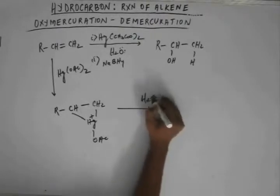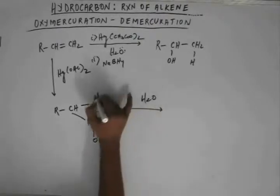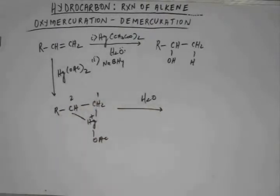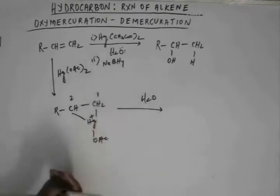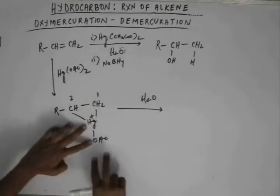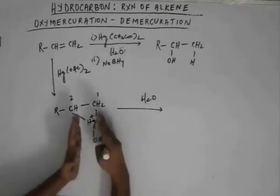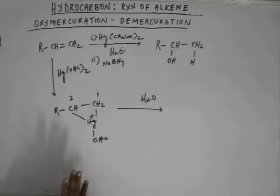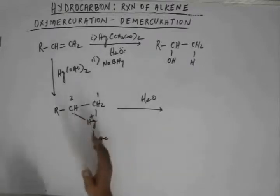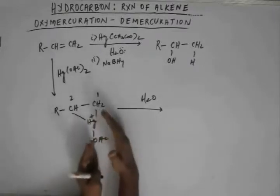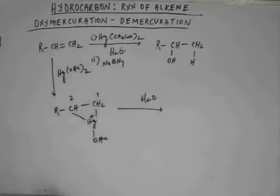The question is, if this is C1 and this is C2, on which carbon should water attack? If water attacks on C1, this mercury and this acetate together will come on C2. If water attacks on C2, this mercury and acetate together will come on C1.